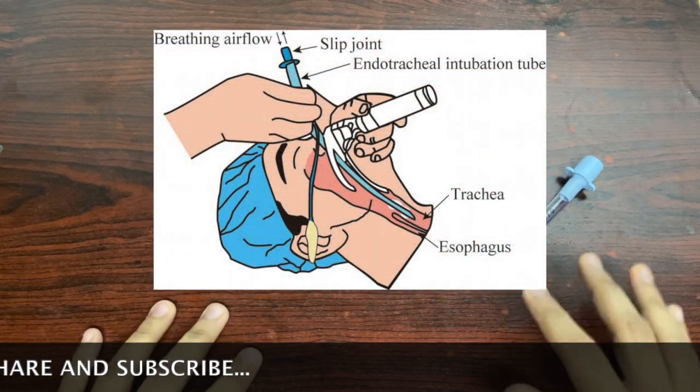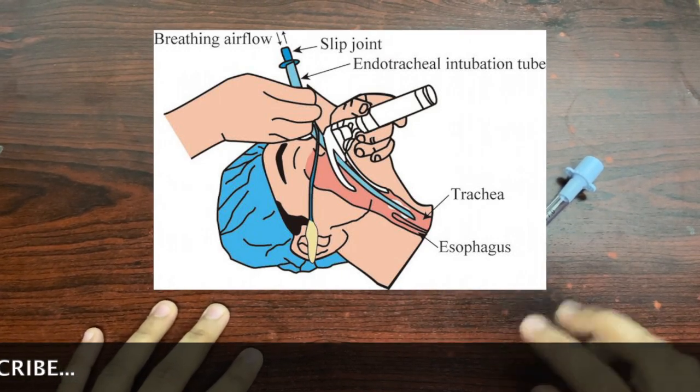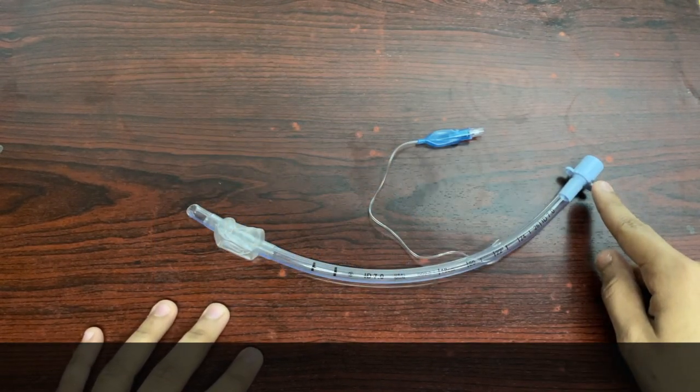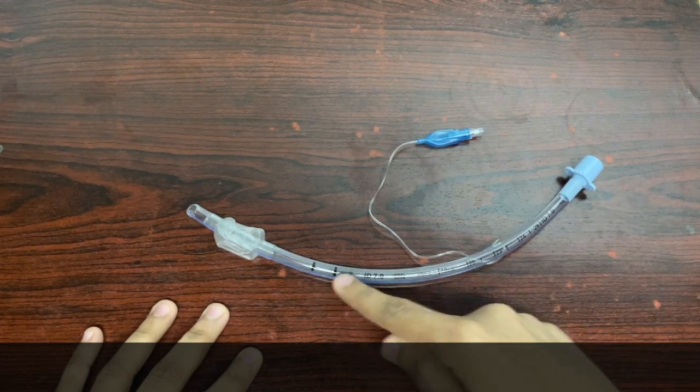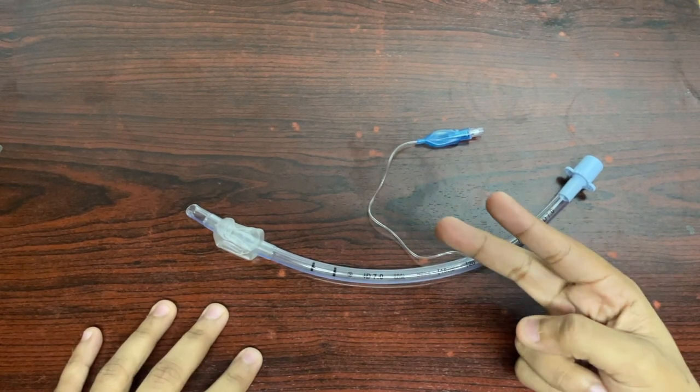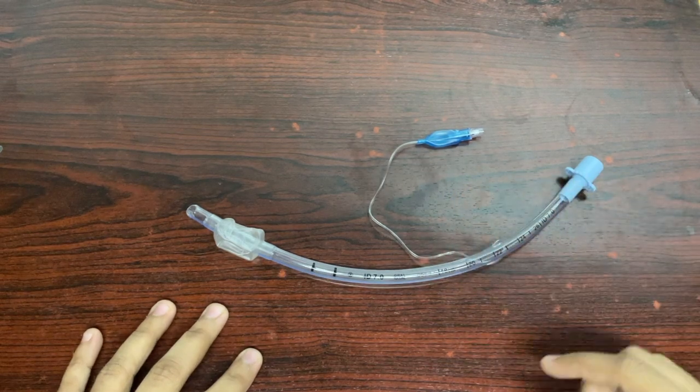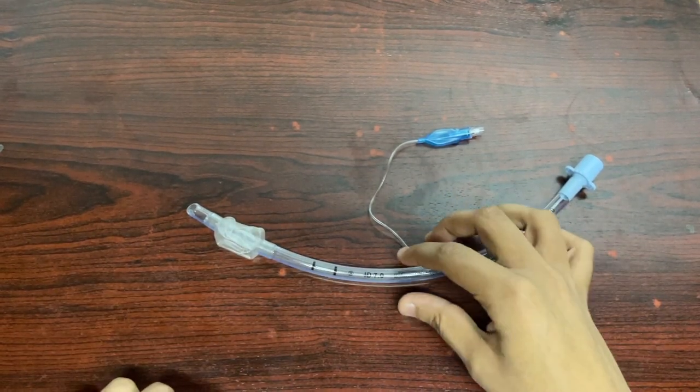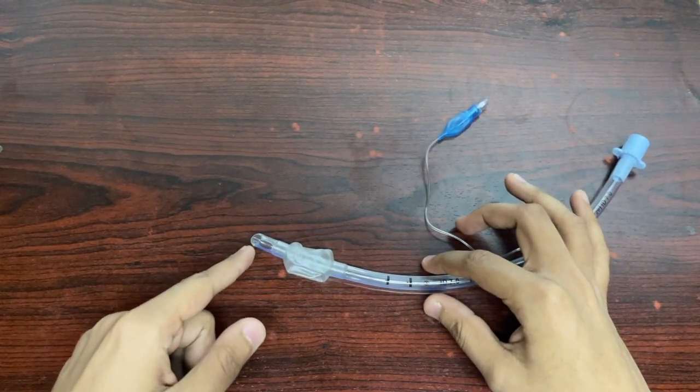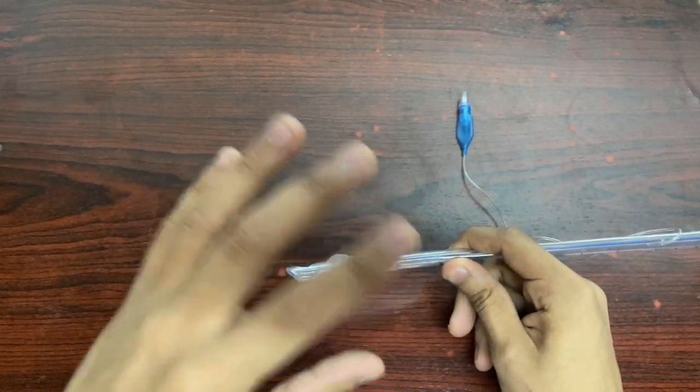Coming towards the parts of the endotracheal tube, there are three essential parts: the proximal part, the endotracheal tube proper which is made up of either India rubber, Vortex, or PVC material, and the last part is the distal end, also called the terminal part.